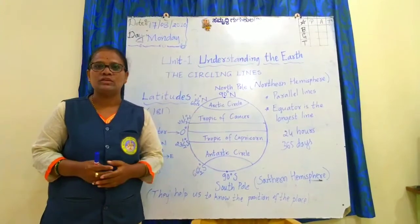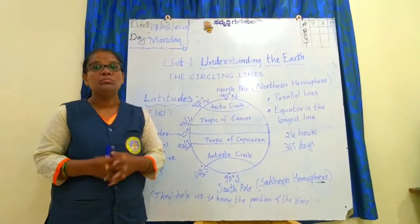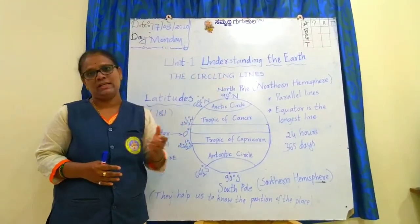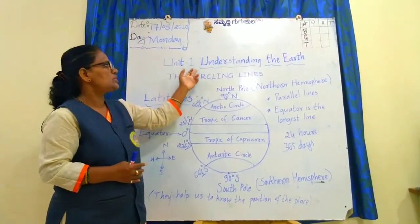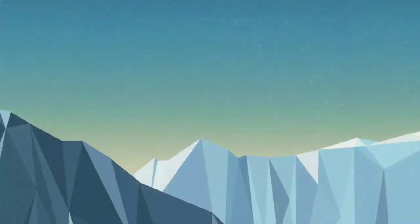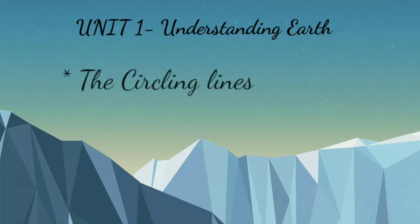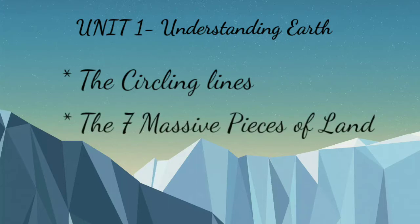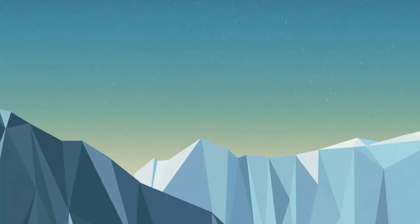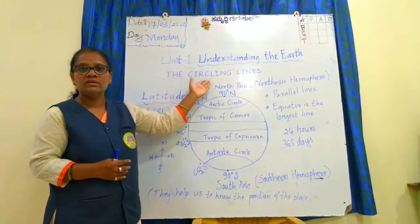In the previous year, you learned a brief introduction about earth. But this year, you are going to learn about the earth in detail. So, in the first unit there are three subunits. The first subunit is about the circling lines, the second subunit is about the seven massive pieces of land, and the third is about the oceans.